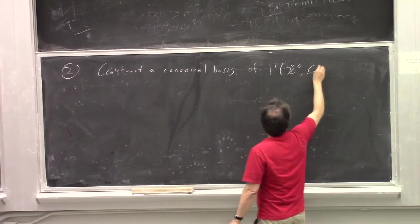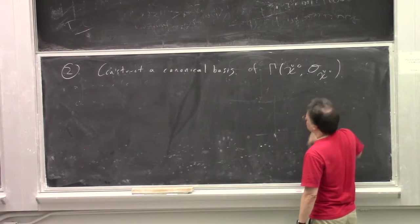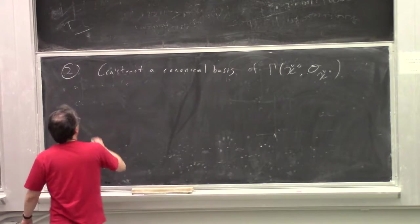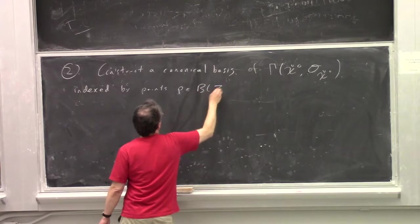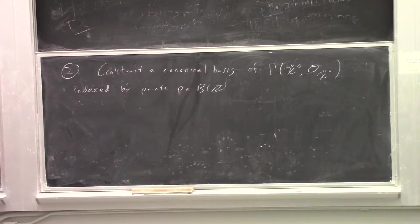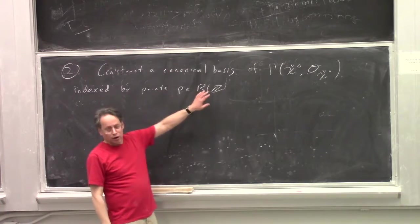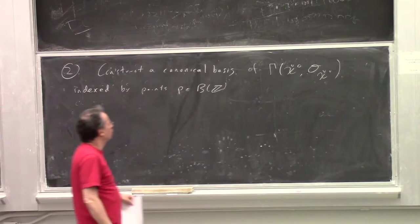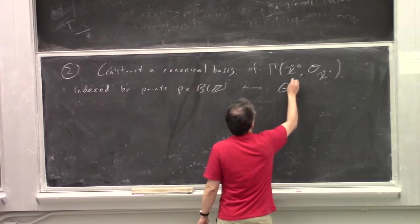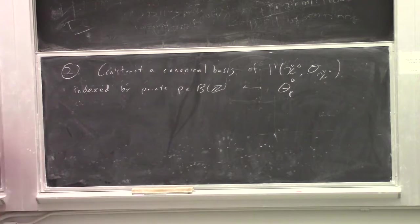Step two is that you now construct a canonical basis of the global regular functions on this open set. So this basis will be indexed by points p in B of Z. So b is an integral affine manifold, so we know what b of z is for a point of integral coordinates. And so for every point p in B of Z, we should have some function, theta_p.